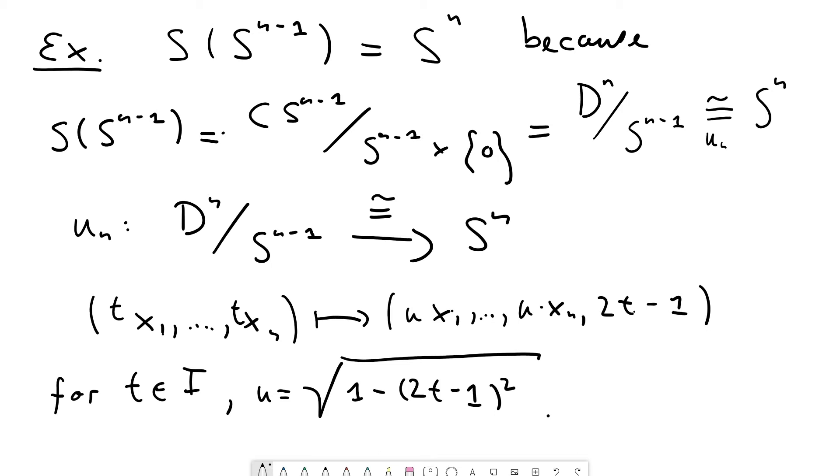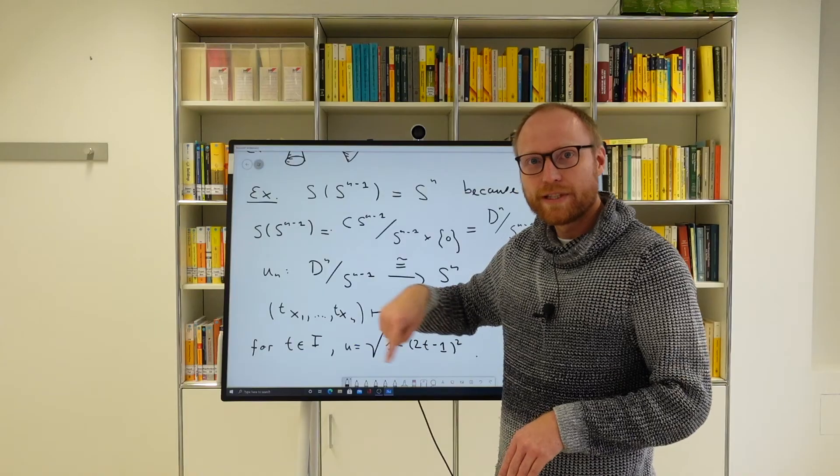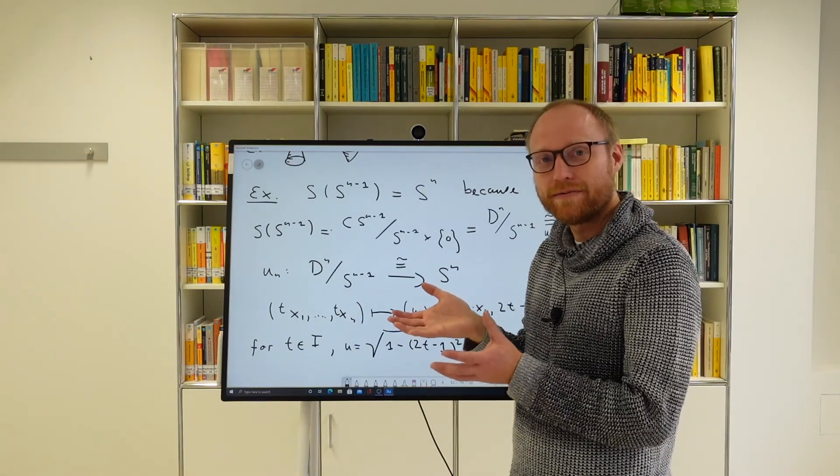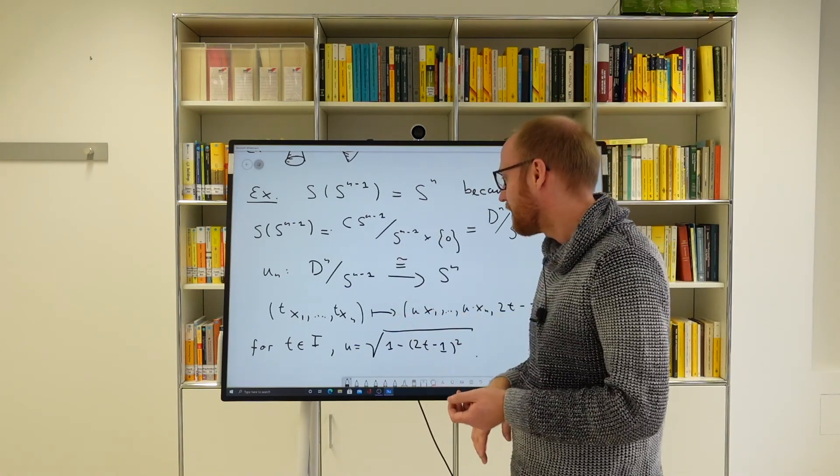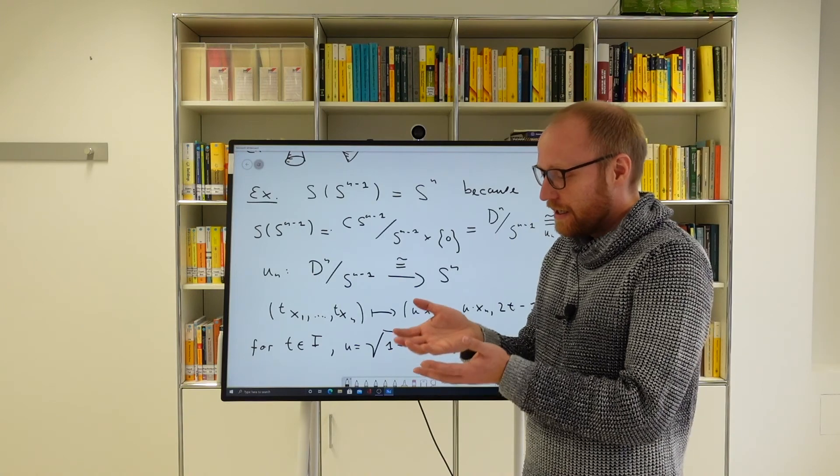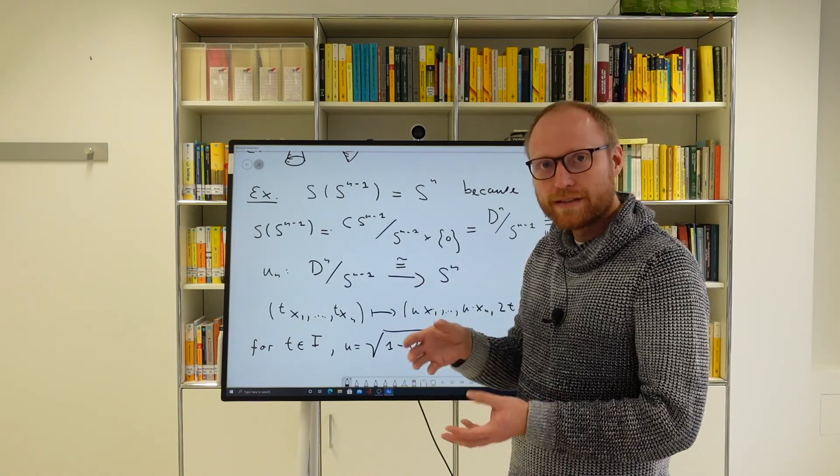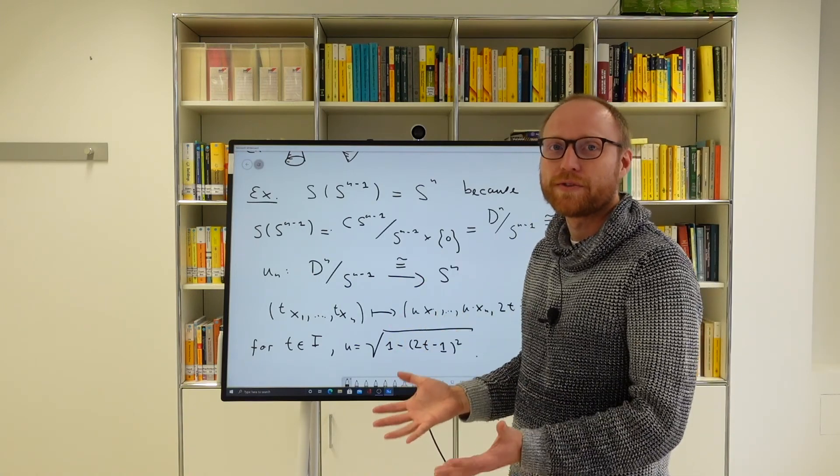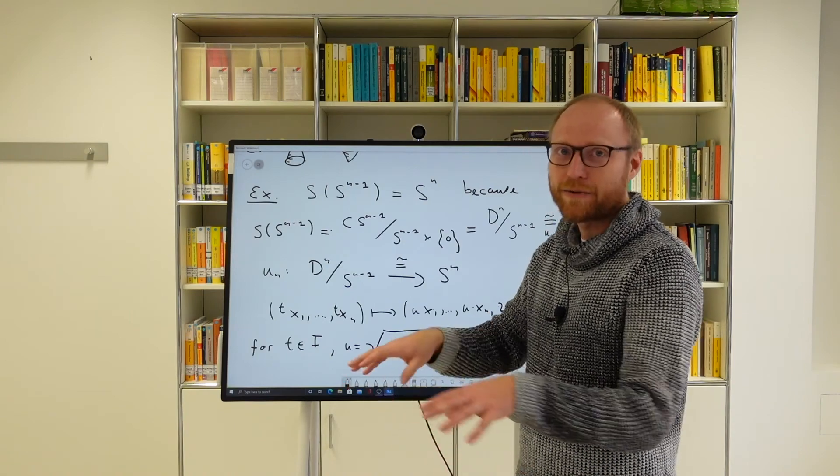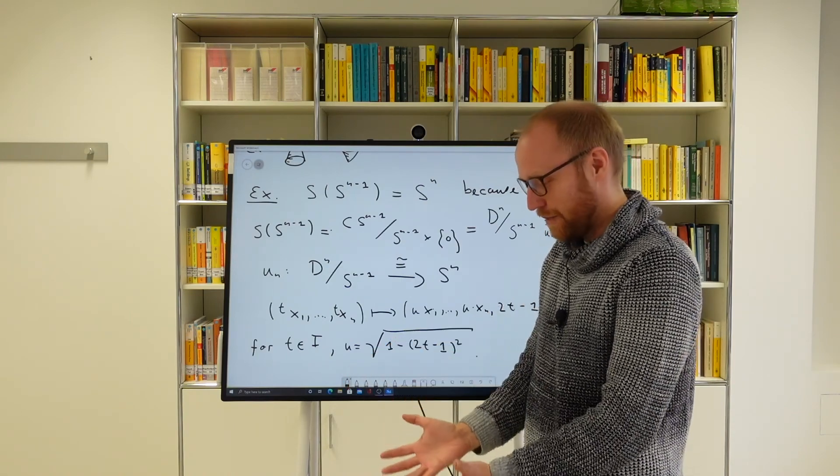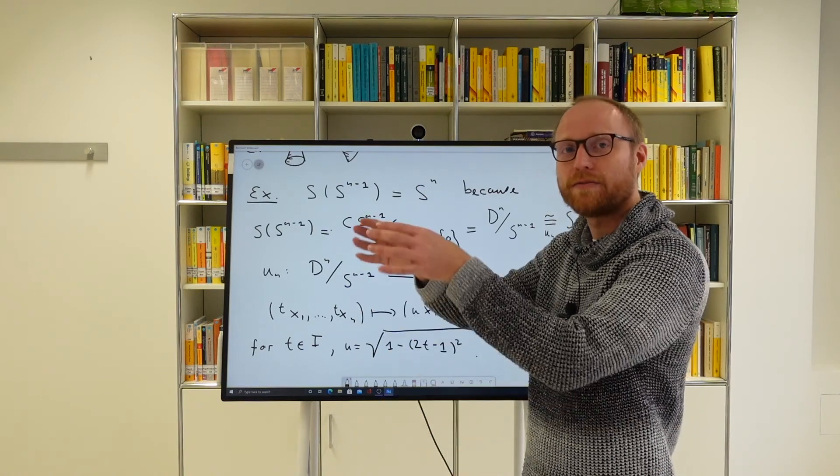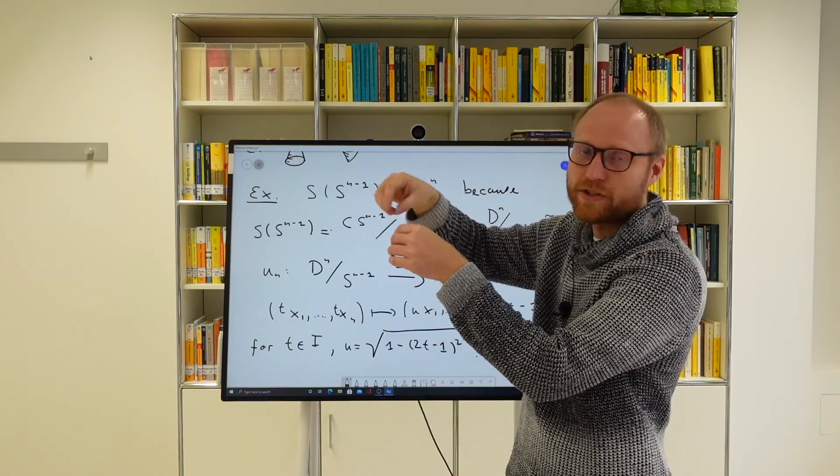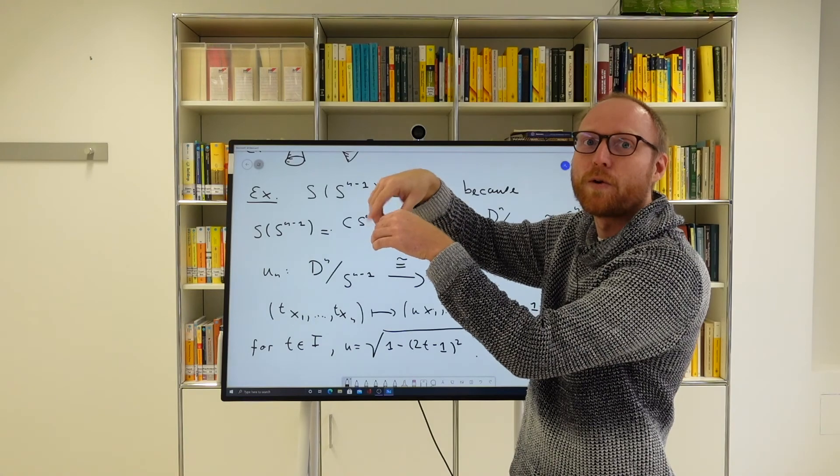And if you think about this, what does this formula tell you? It tells you that if you have the two disk, yeah, then you wrap it round the sphere, round the two sphere in this case, so we visualize it for n equals 2, such that the midpoint of your two disk maps to the south pole of your sphere.